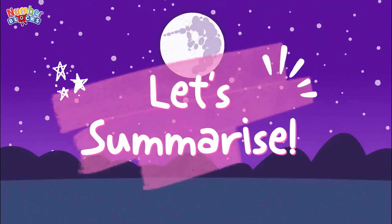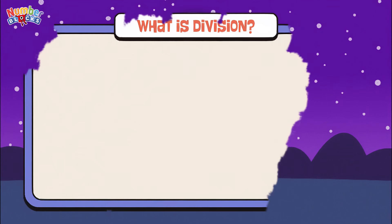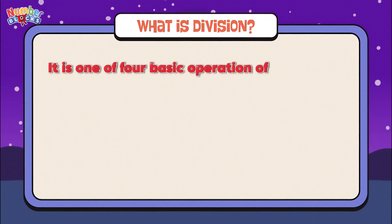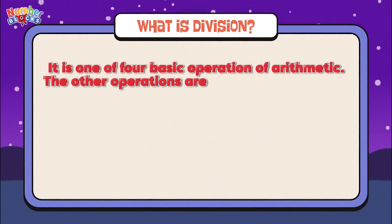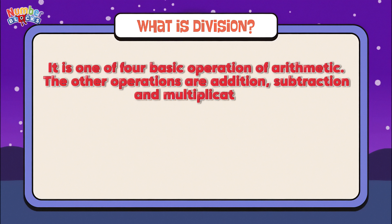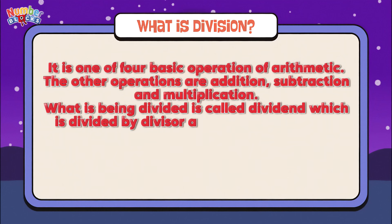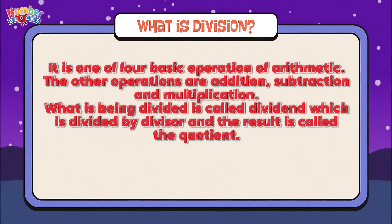Let's summarize. What is division? It is one of four basic operations of arithmetic. The other operations are addition, subtraction, and multiplication. What is being divided is called the dividend, which is divided by the divisor. And the result is called the quotient.